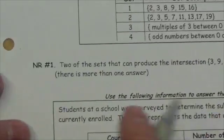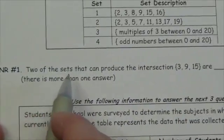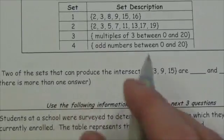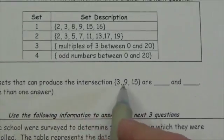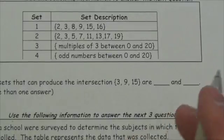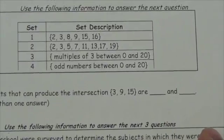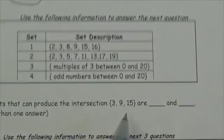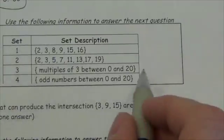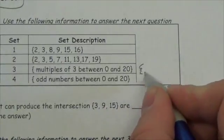Now the question says two of the sets that can produce the intersection {3, 9, 15} are blank and blank. Okay, two sets that produce the intersection {3, 9, 15}. I might want to draw out what these sets are right here just to see them.